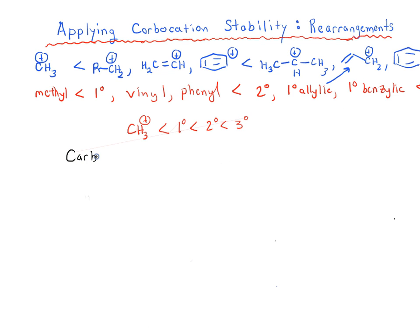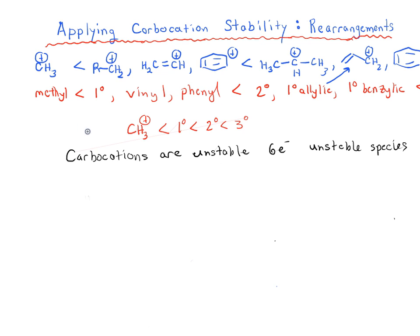The key thing to remember about carbocations is that they're unstable — they have less than a full valence shell of electrons, only six electrons. They are very electron-poor species. Even a fairly stable carbocation like a tertiary carbocation is still unstable and will react with anything that has a pair of electrons. Particularly unstable carbocations — secondary and anything less stable — can rearrange to give a more stable carbocation.